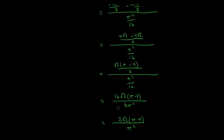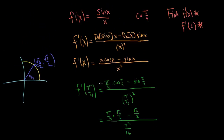That's enough simplification. Let's recap — that was a lot. We started with f prime of sine x over x. We found the derivative using the quotient rule, and the derivative was x cosine x minus sine x over x squared. We then wanted to find the derivative evaluated at pi over 4, so we plugged in pi over 4 for x everywhere. We found cosine of pi over 4 and sine of pi over 4 from our unit circle.